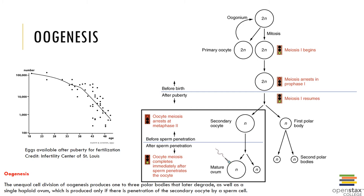Unlike spermatogenesis in males, oogonia complete their mitotic divisions before birth. Meiosis one occurs between the third and seventh months of fetal development, where the daughter cells or primary oocytes prepare to undergo meiosis. They proceed as far as prophase one but then the process is halted. The primary oocytes remain in a state of suspension until the individual reaches puberty, when rising levels of FSH trigger the start of the ovarian cycle.